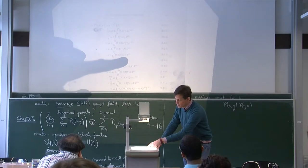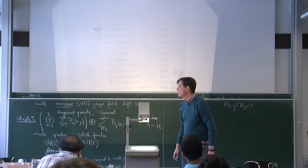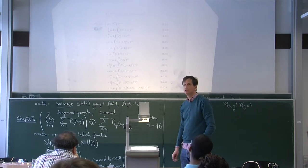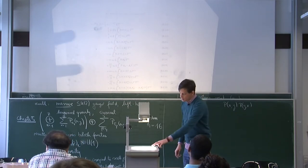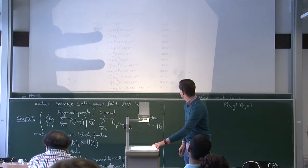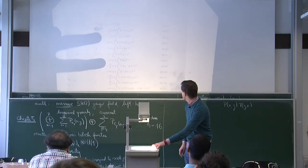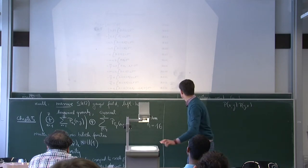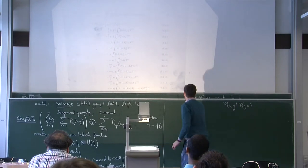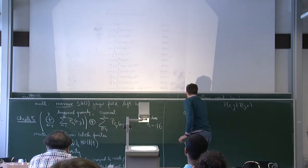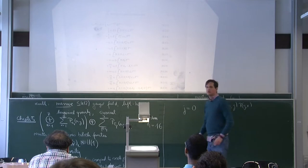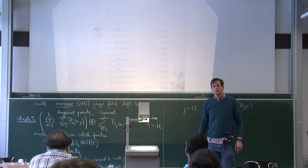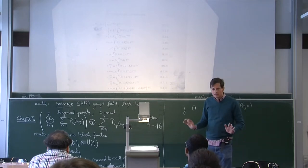To understand how you get the homogeneous Maxwell equations, you just set the current equal to zero — j equals zero. These are the homogeneous Maxwell equations, so that part is easy.